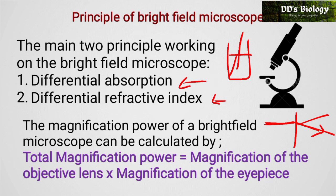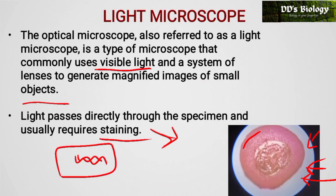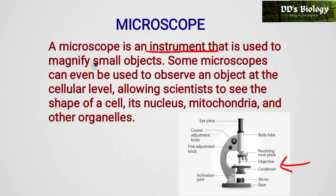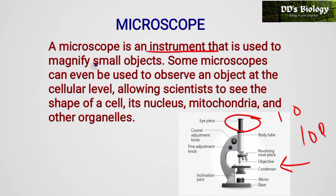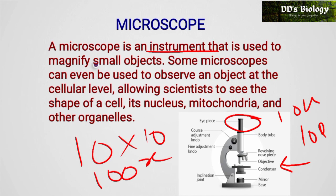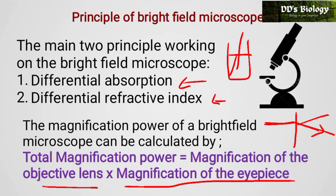The magnification power of the bright field microscope is calculated as: total magnification = magnification of objective lens × magnification of eyepiece. In the objective part there are three types of lenses: 10X, 45X, 100X. In the eyepiece there are 10X or 15X lenses. For example, if the objective lens is 10X and the eyepiece is 10X, then 10 × 10 = 100X total magnification.